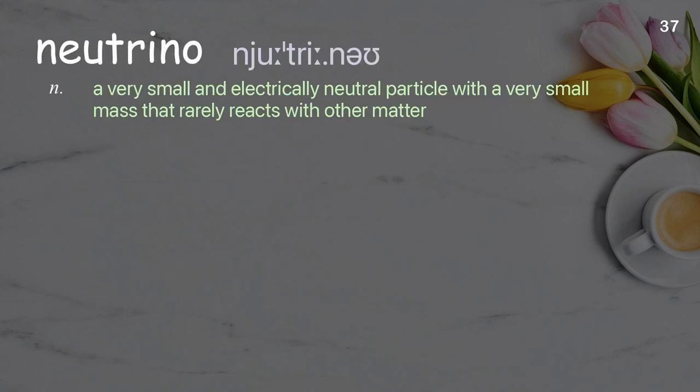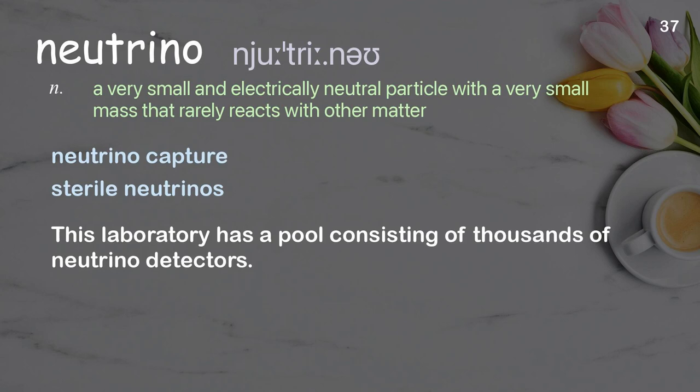Neutrino: A very small and electrically neutral particle with a very small mass that rarely reacts with other matter. Examples: neutrino capture, sterile neutrinos. This laboratory has a pool consisting of thousands of neutrino detectors.